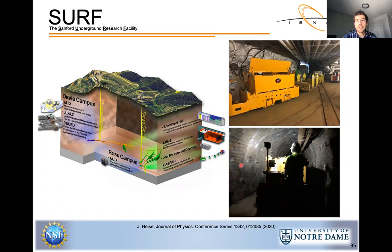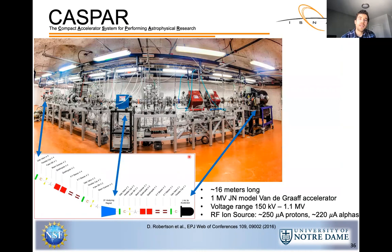The cage ride is sometimes crowded, wet, cold, dark, and bumpy. At the bottom, you get into a cart for a roughly 10-minute ride over to CASPAR. CASPAR — the Compact Accelerator System for Performing Astrophysical Research — features a 1 MV JN model Van de Graaff accelerator with a voltage range of 150 kV to 1.1 MV. The RF ion source produces about 250 μA of protons and 220 μA of alpha particles.